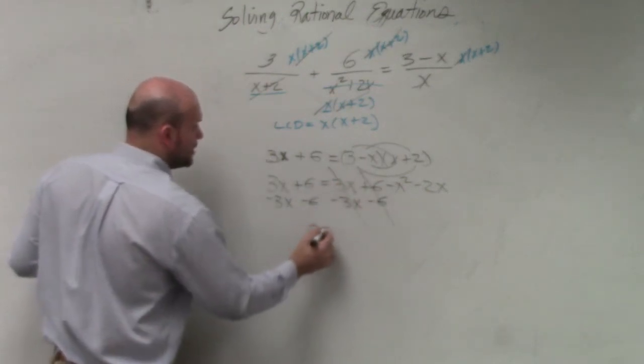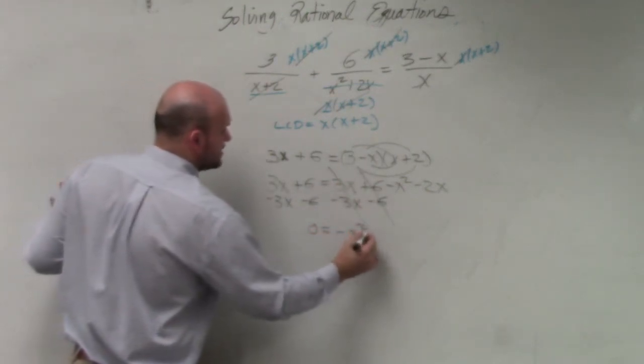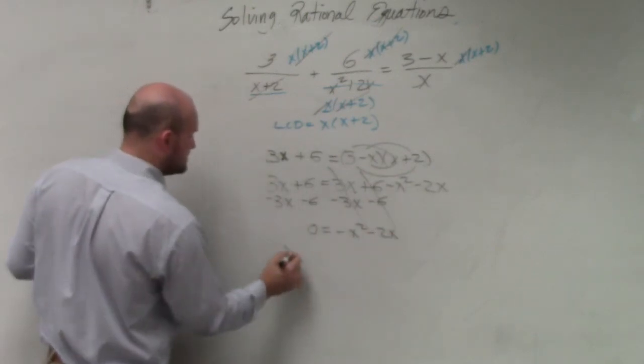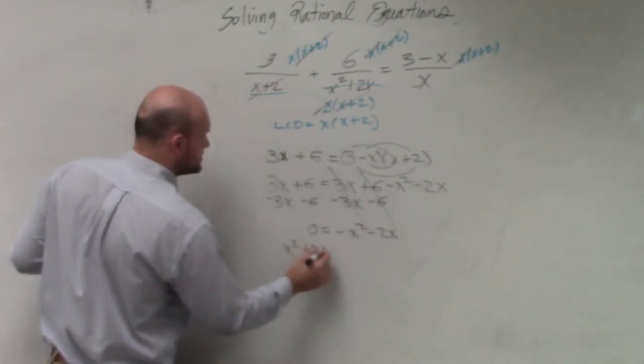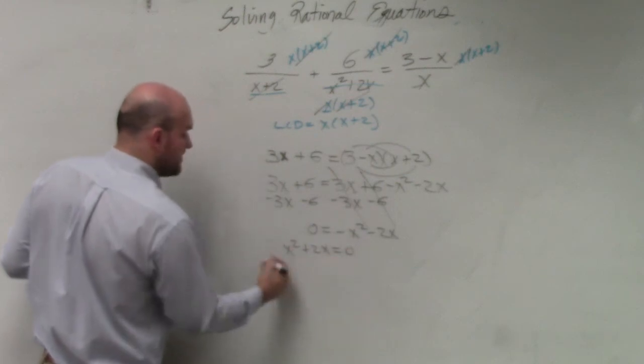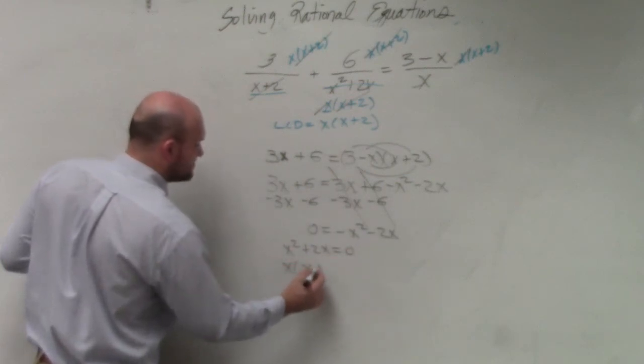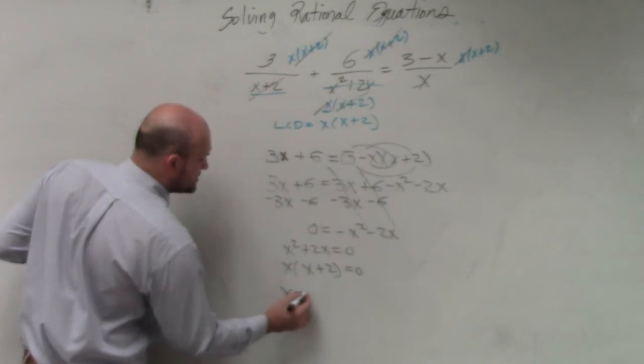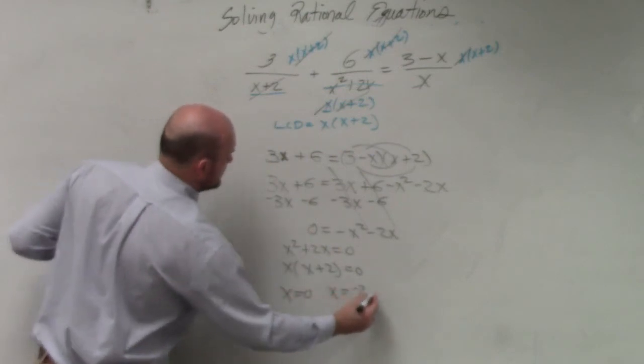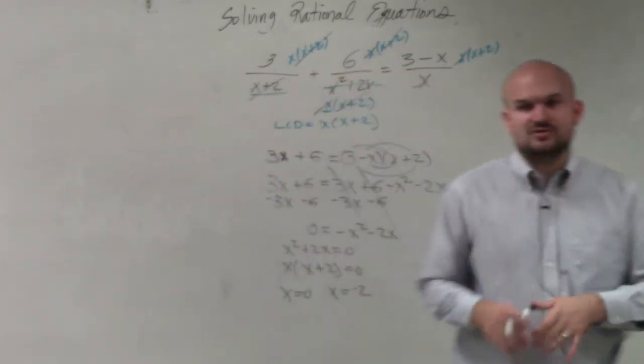So I get 0 equals negative x squared minus 2x. I'll put those on the other side. So I get x squared plus 2x equals 0. Factor out the x. x times x plus 2 equals 0. Use the zero product property. I get x equals 0 and x equals negative 2.